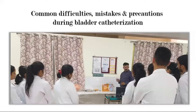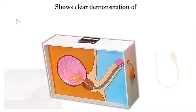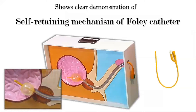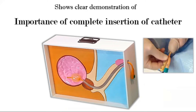This model has been specifically designed to teach students about the common difficulties, mistakes, and precautions during bladder catheterization. For example, you can teach your students exactly where the balloon of the catheter is and how the self-retaining mechanism of the Foley catheter works.